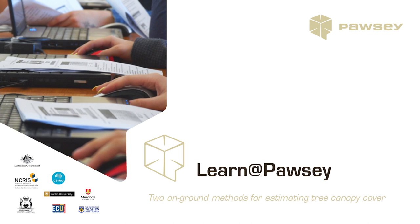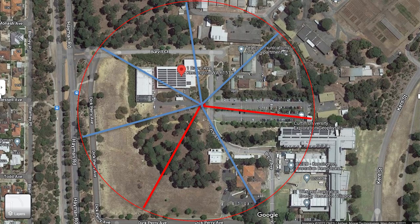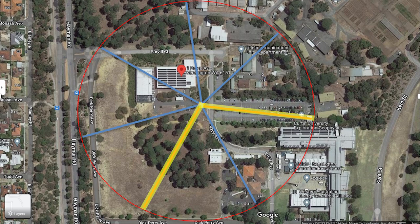In this video, we're going to demonstrate two on-ground methods for estimating tree canopy cover. The location shown in the Google Earth image is in Kensington in Perth, Western Australia. Over the Google Earth image, we've drawn a wagon wheel shape with seven spokes. Each spoke on the wheel represents a transect — a line that we walk along and take measurements, observations, and estimates to help us determine the amount of tree canopy cover. The first demonstration will be along the red transect that travels down through the grove of trees, using the method of counting and measuring steps.